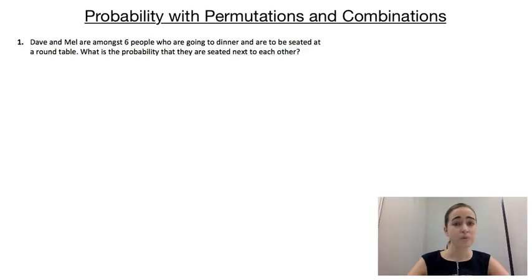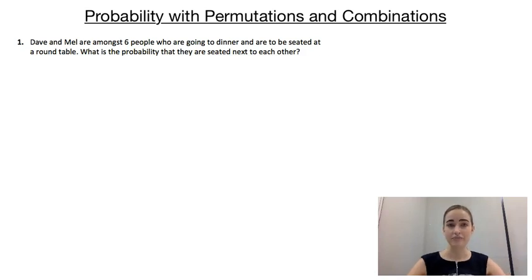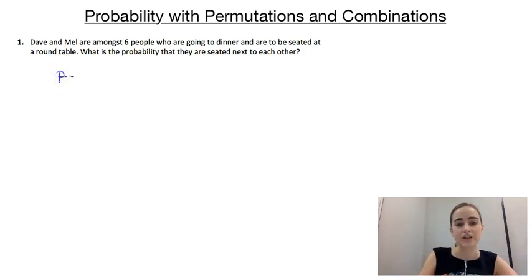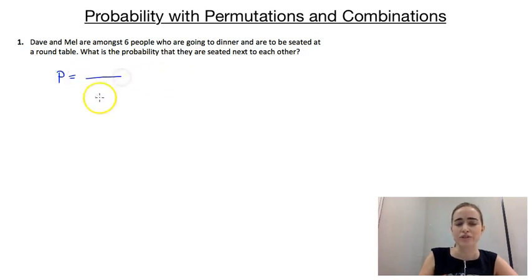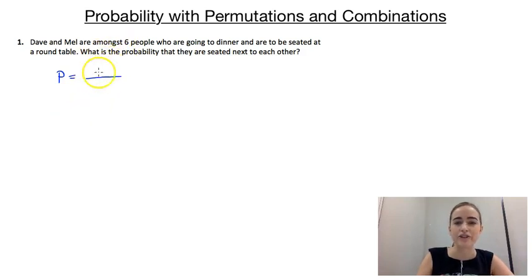Our first problem says Dave and Mel are amongst six people who are going to dinner and they're going to be seated at a round table. What is the probability that they are seated next to each other? I often like to do the total number of outcomes in the sample space first and then figure out the favourable outcomes.